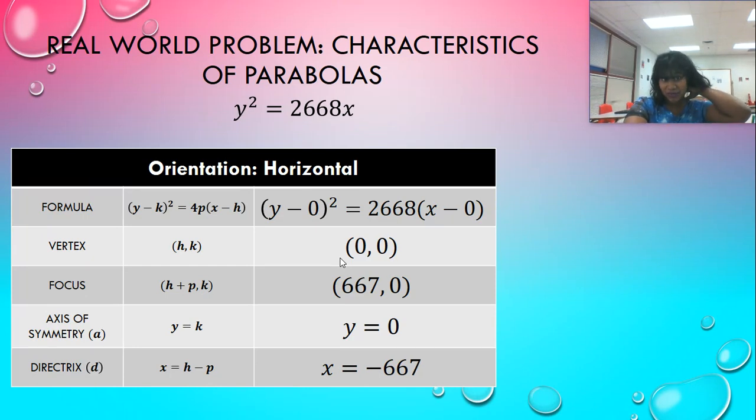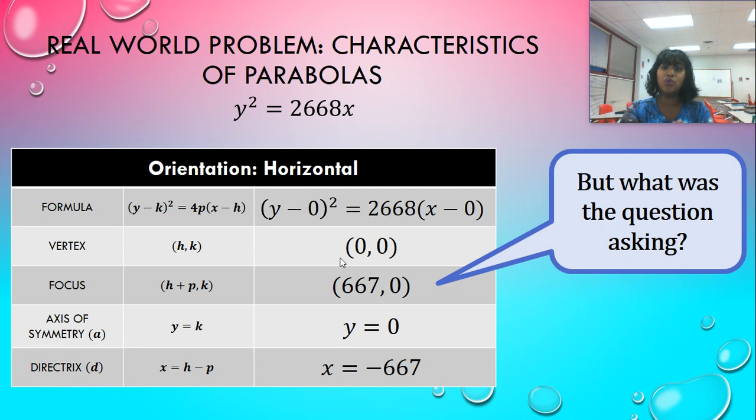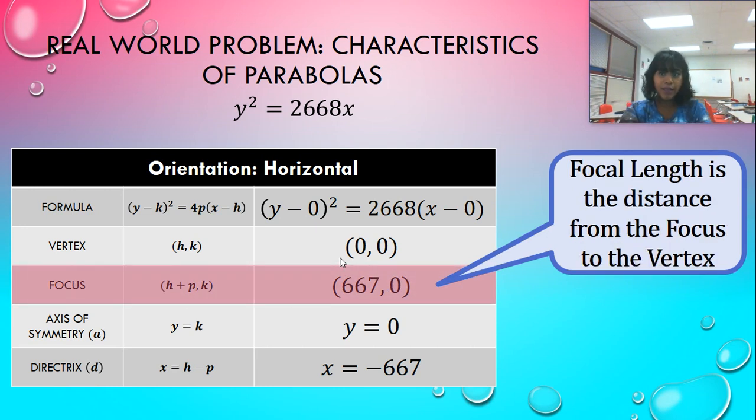Because P was positive, we are in the positive direction. For horizontal, that means open to the right. And so we actually need to know what the question is asking. Are we graphing this? No. Are we calculating the focal length? Yes. So probably dealing with the focus. Okay.